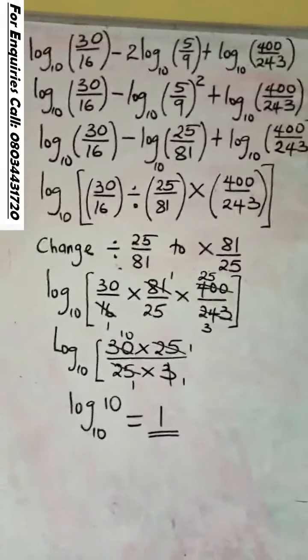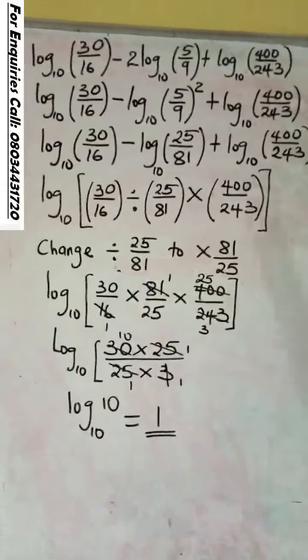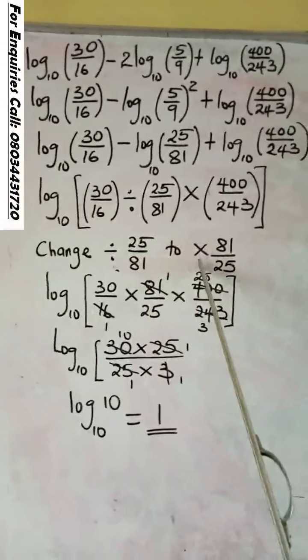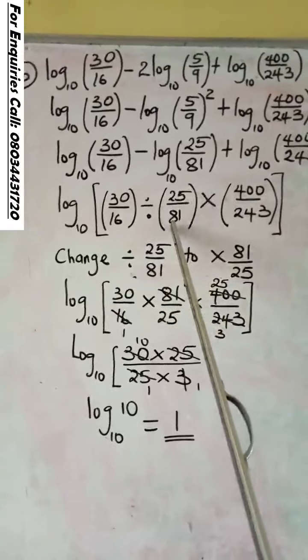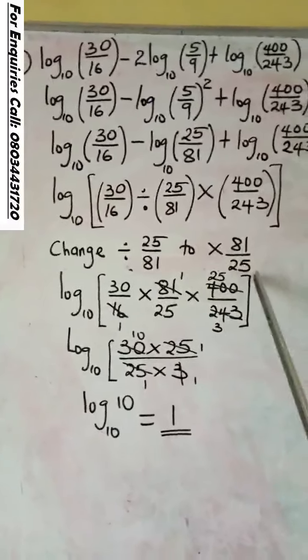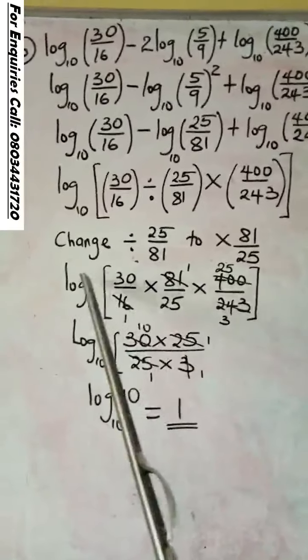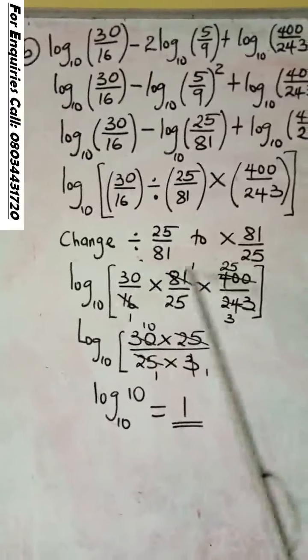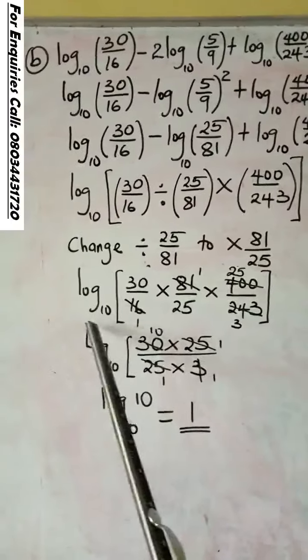Remember our BODMAS. Division comes before multiplication. What you have here now is change this division toward multiplication. When you do that, you will turn 25 over 81 upside down. It will be 81 over 25. You will substitute them. It will now be log 30 over 16 times 81 over 25 times 400 over 243 base 10.